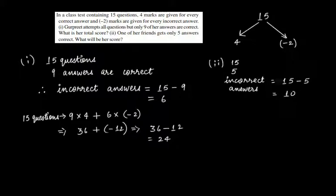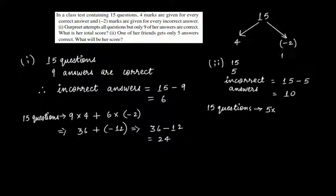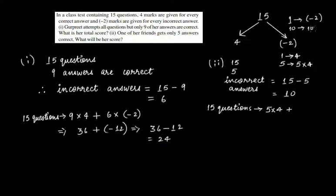That gives 10, so 5 questions were attempted correctly and 10 questions were attempted incorrectly. Since she attempted 5 questions correctly, and for every single correct question she will be awarded 4 marks, therefore for 5 questions attempted correctly she will be awarded 5 times 4. Plus, for every single question attempted incorrectly she will be awarded minus 2, therefore for 10 questions that is 10 times minus 2.